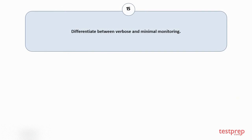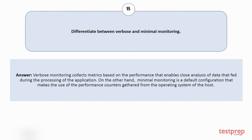Question number 15: Differentiate between verbose and minimal monitoring. Verbose monitoring collects metrics based on performance, enabling close analysis of data fed during the processing of the application. On the other hand, minimal monitoring is a default configuration that makes use of performance counters gathered from the operating system of the host.